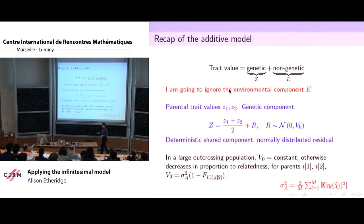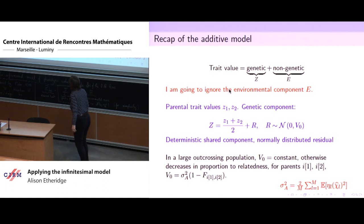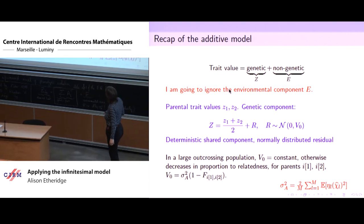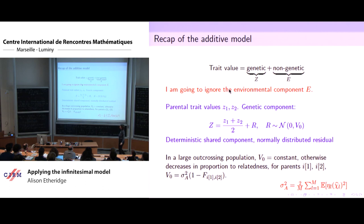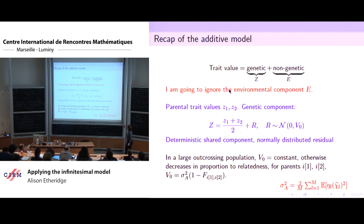Let me recap a little bit of what Amandine showed, because I want to indicate that there are synergies. She wrote down the additive version of the model: the trait value has a genetic component and a non-genetic component. We need it there for mathematical reasons — we need it to make everything go through, because we differentiate a lot of things which are not differentiable if you don't convolve them with something nice and smooth.